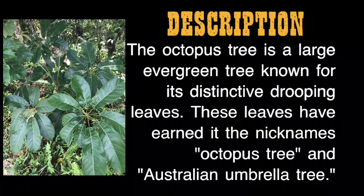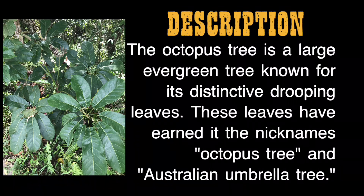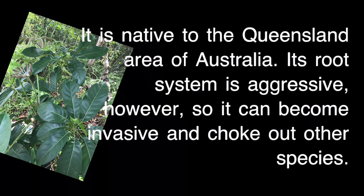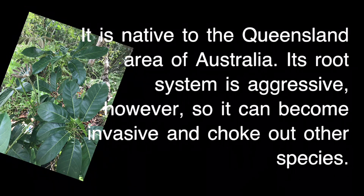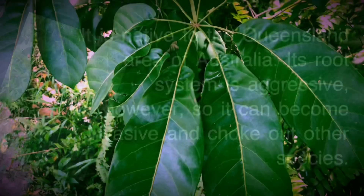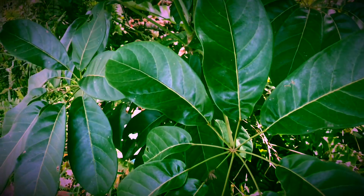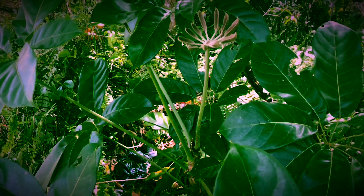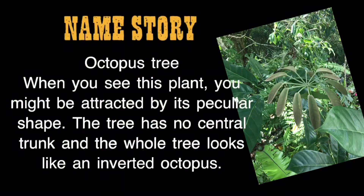The Octopus Tree is a large evergreen tree known for its distinctive drooping leaves. These leaves have earned it the nicknames Octopus Tree and Australian Umbrella Tree. It is native to the Queensland area of Australia. Its root system is aggressive, so it can become invasive and choke out other species.